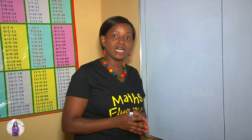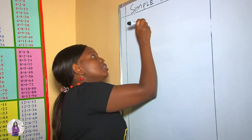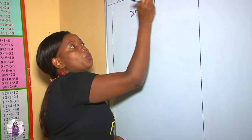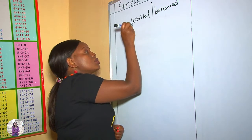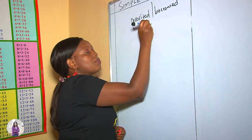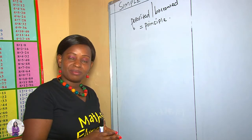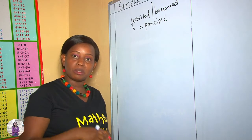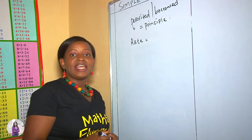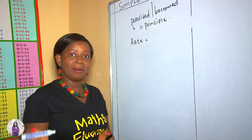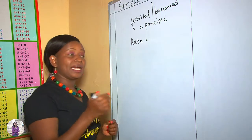This introduces us to some vocabulary used in the topic of simple interest. The money deposited or borrowed from a bank — whatever you borrow or deposit in a bank — in one word is called the principal. So all of this is what we call the principal. This money is earning or attracting profit, and the profit is expressed in terms of percentages. This profit in terms of percentage is what we call the rate. And this money you borrow or deposit — you are given a period of time to pay back. Therefore, the time you are supposed to take is what we call time, T for time.